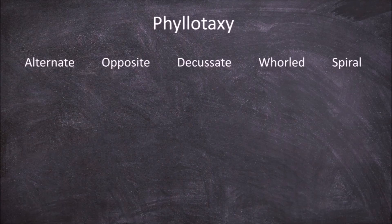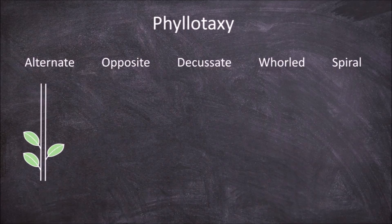If a plant has alternate phyllotaxy, the leaves are found on nodes on both sides of the stem and move up in stages, one side at a time.